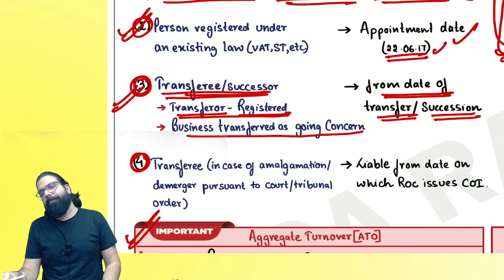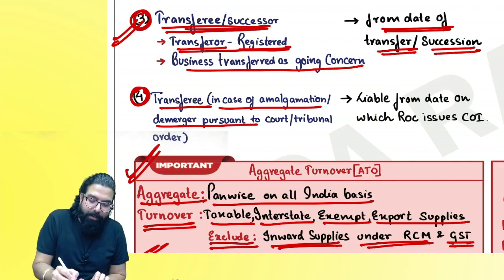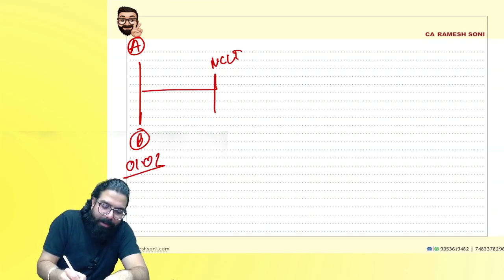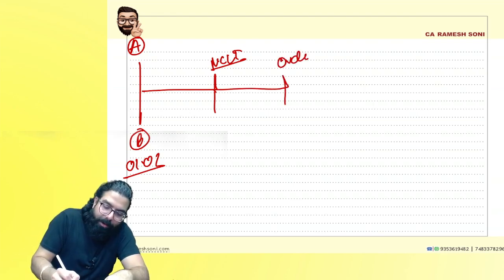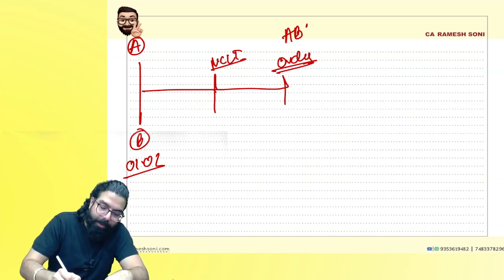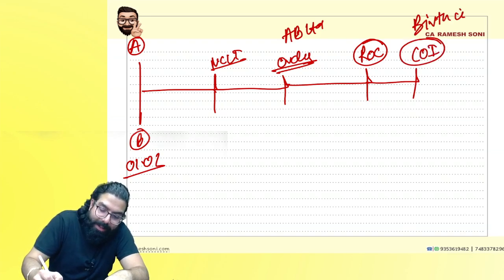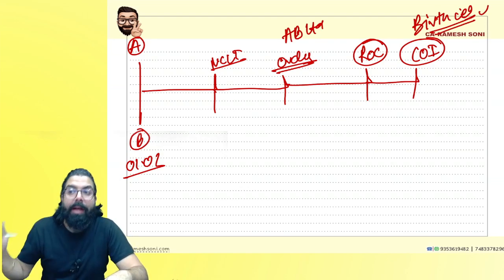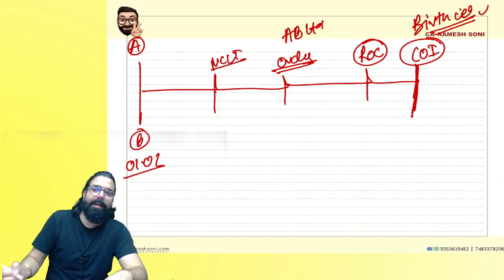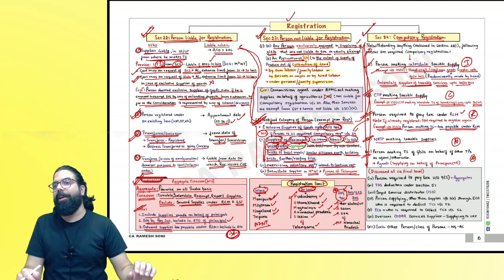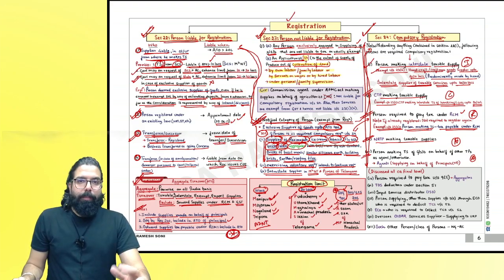In case of amalgamation or de-merger pursuant to a court order, the board of directors of two companies decide to merge and go to NCLT — National Company Law Tribunal. NCLT gives the order, and then they go to the Registrar of Companies for a certificate of incorporation. The new entity becomes liable from the day the ROC issues the certificate of incorporation — that is their birth certificate and the trigger for GST registration liability.